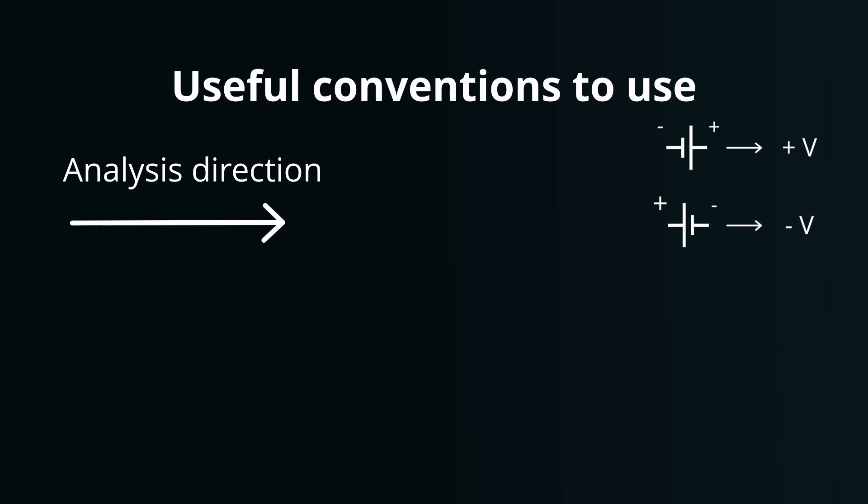In the case of capacitors, entering the positively charged plate and exiting the negatively charged plate, the voltage is accounted as minus Q over C, or minus V. However, if we move from the negatively charged plate and exit the positively charged plate, it's treated as Q over C, or plus V.